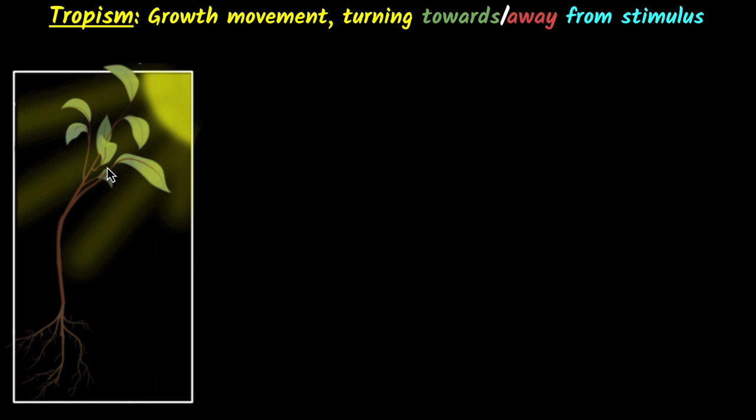Why? Because first of all, you can see both the shoot and the roots are growing, so it's a growth movement. Then there is turning. This is turning towards the sunlight. This is turning away from the sunlight. And you can see the stimulus over here is sunlight.